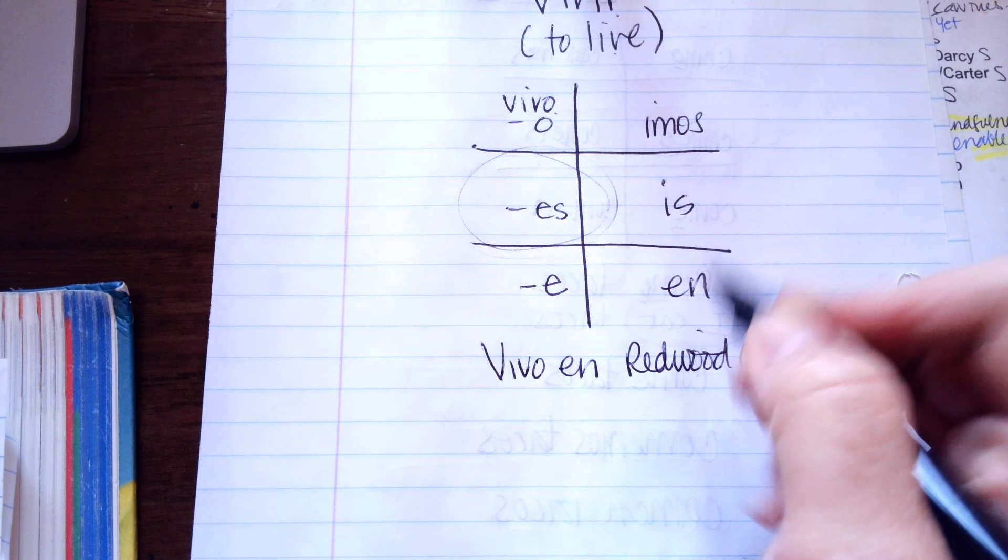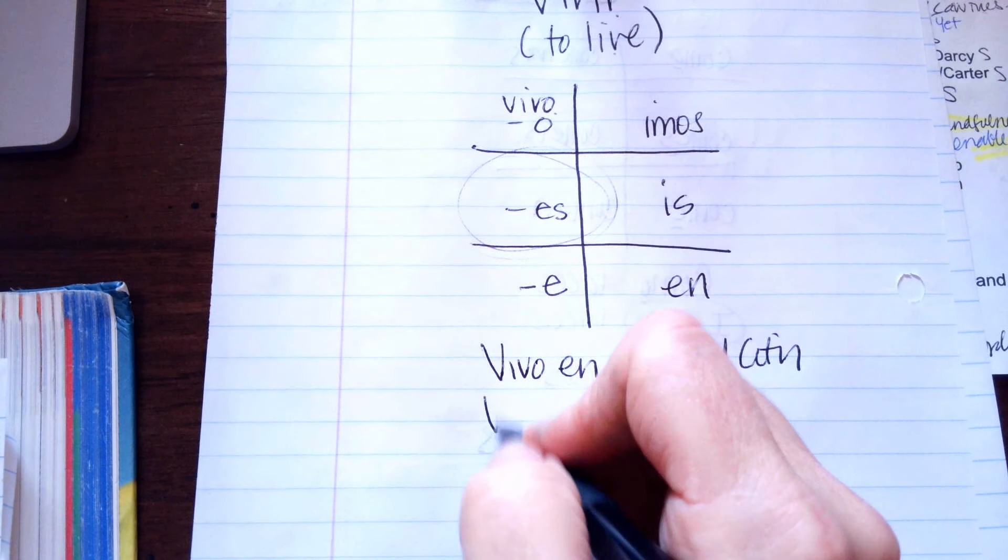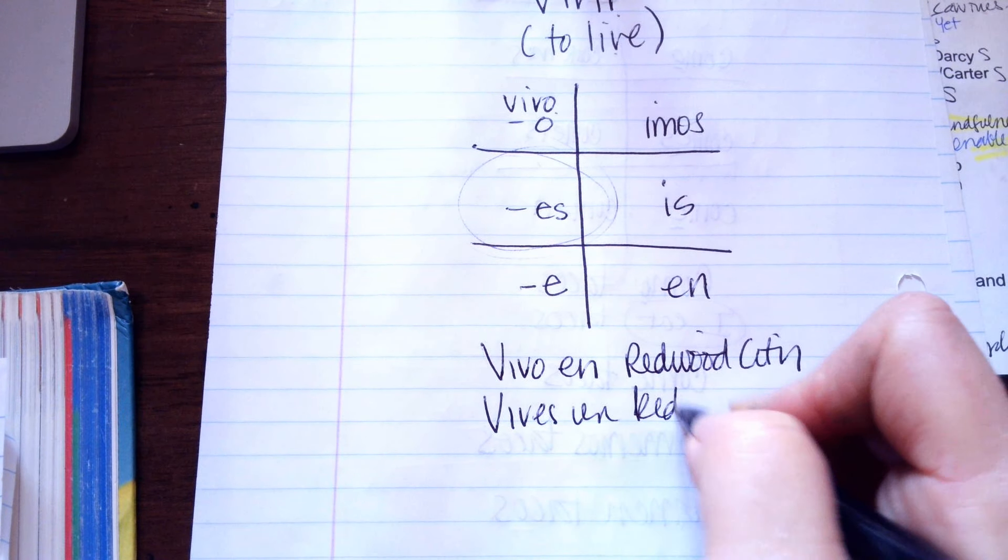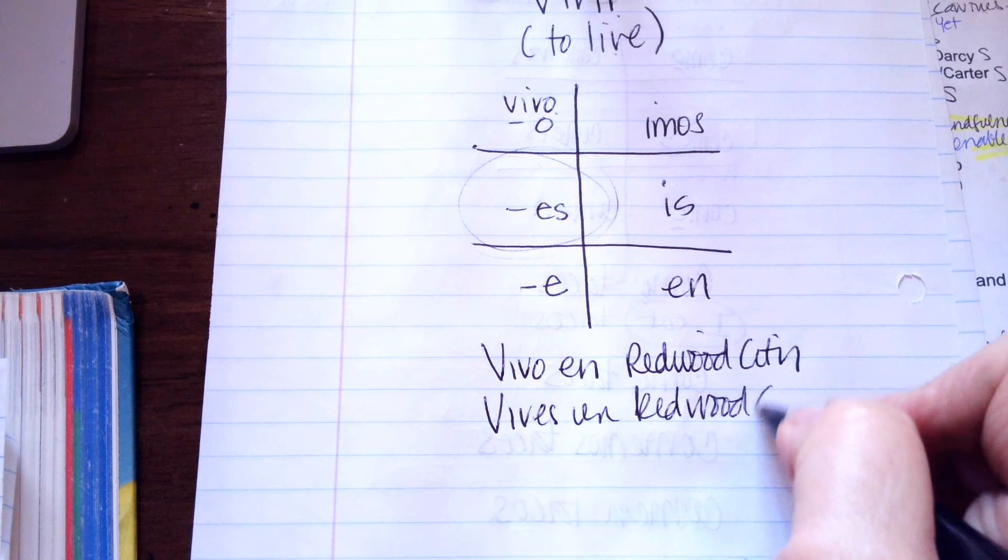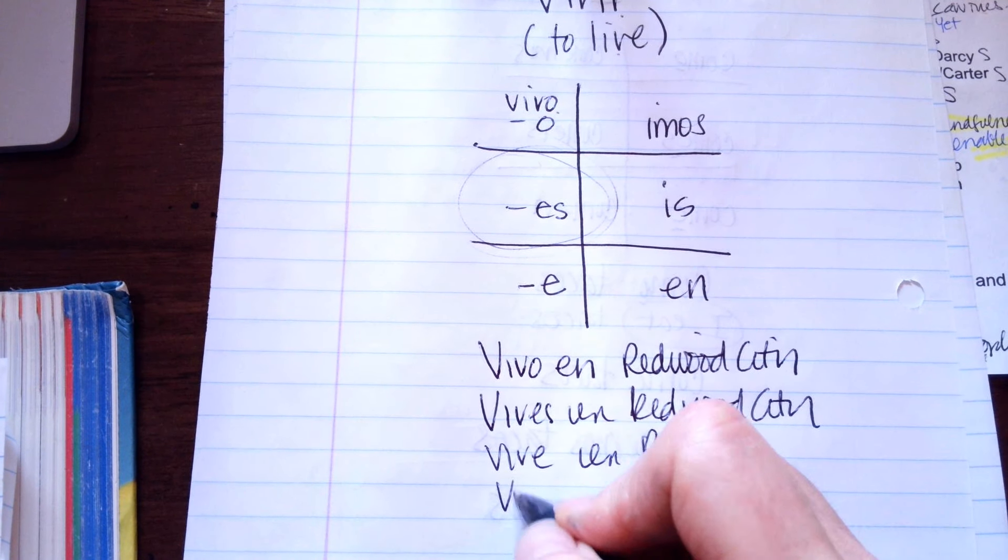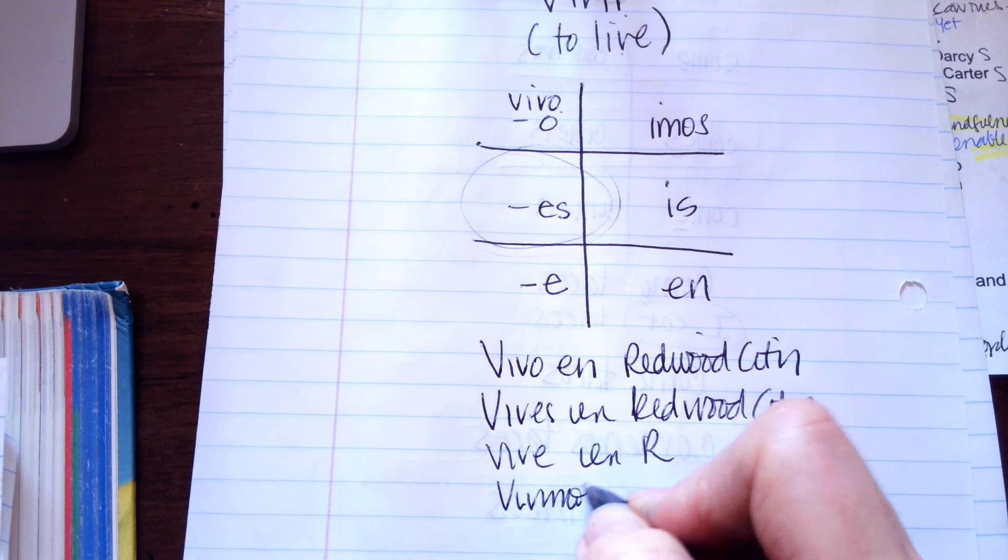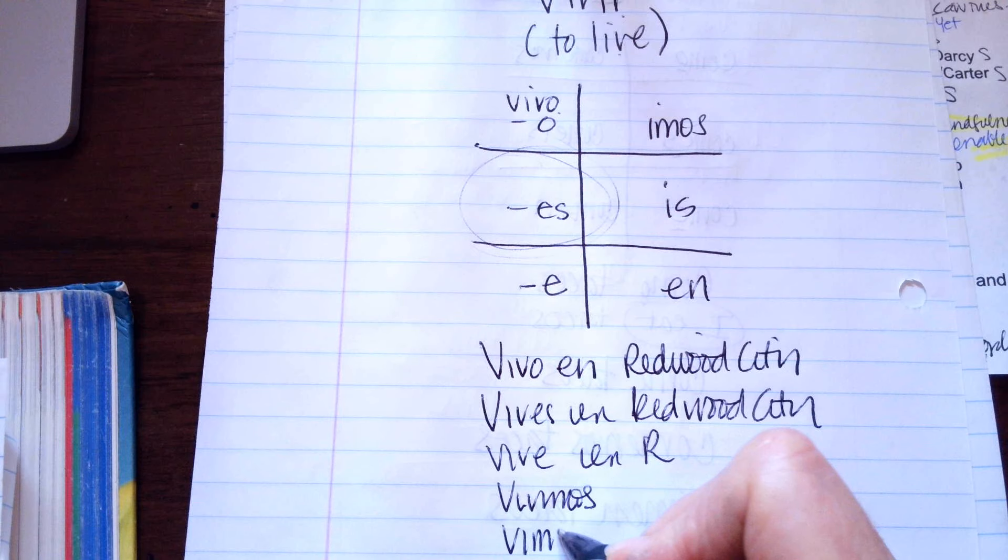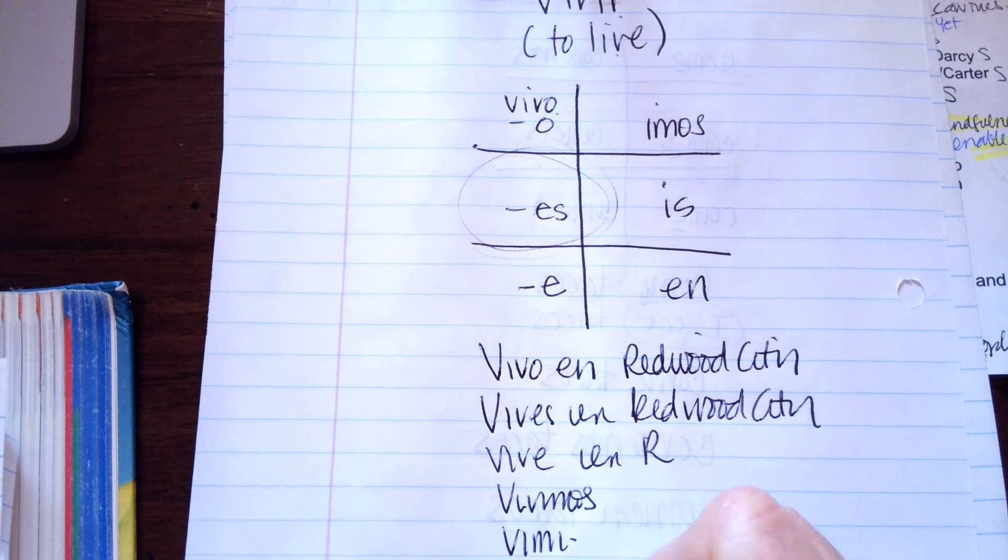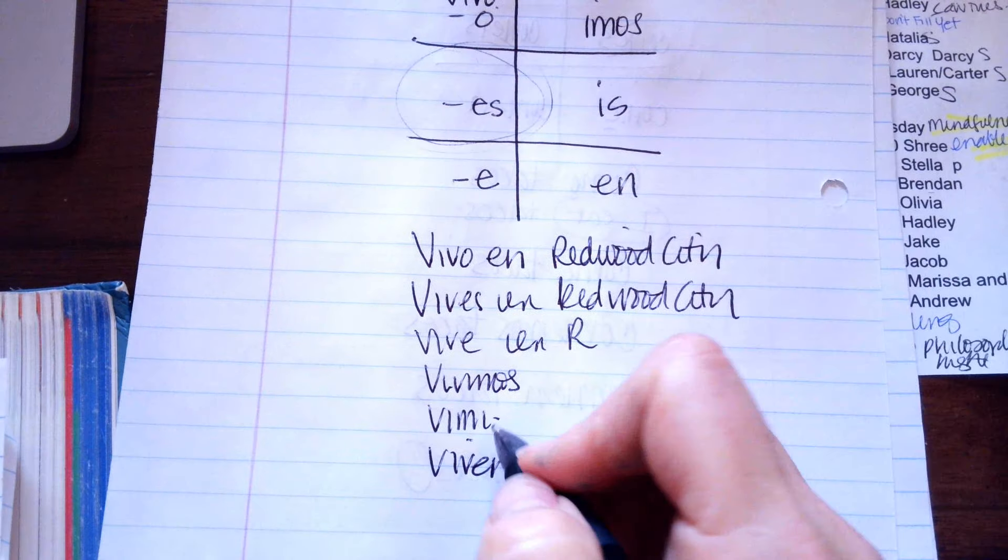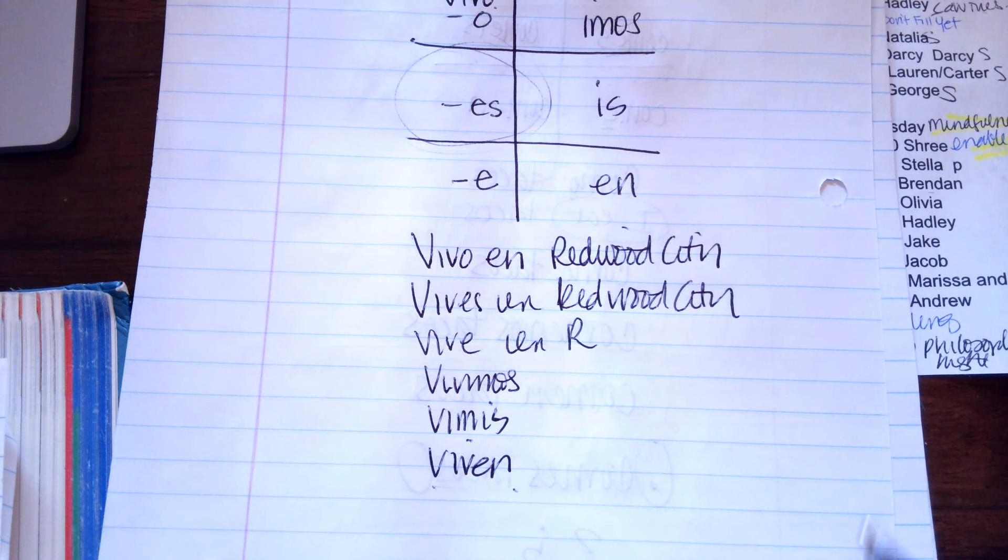And then, if you were saying you, you would say, vives in Redwood City. Vive in Redwood City. Vivimos, we live in Redwood City. Vivimos, and viven in Redwood City.